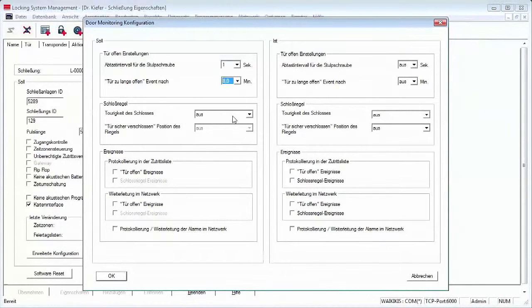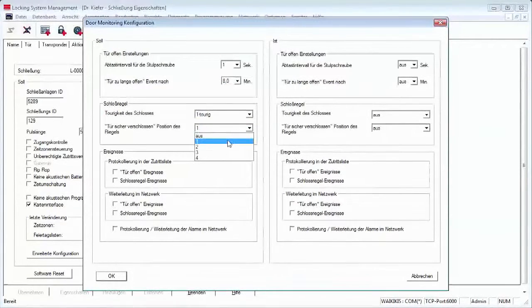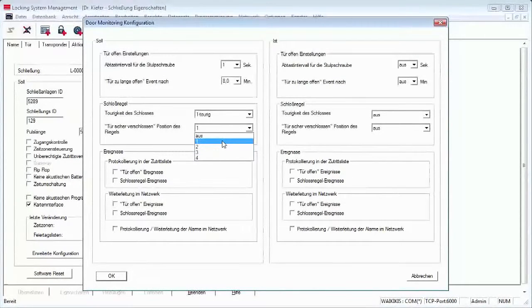The number of turns in the lock indicates how many times I must turn the cylinder knob to extend the deadbolt completely. In the case of an outside door with multipoint locking, I may need to turn the lock two, three or four times before the deadbolt is fully extended.